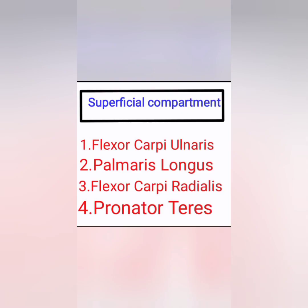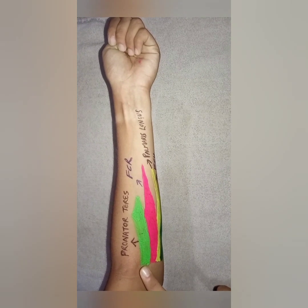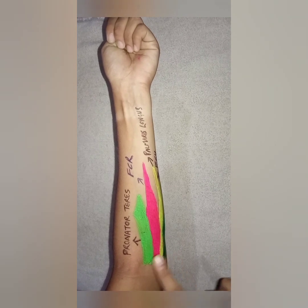The anterior compartment is divided into three parts: superficial compartment, intermediate compartment, and deep compartment. Let's talk about each one by one. The superficial compartment group of muscles consists of four muscles: flexor carpi ulnaris, palmaris longus, flexor carpi radialis, and pronator teres. I have highlighted these superficial group of muscles.